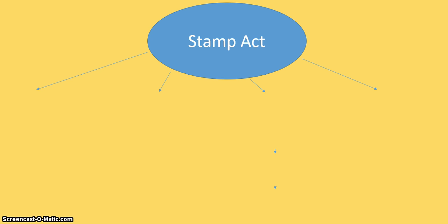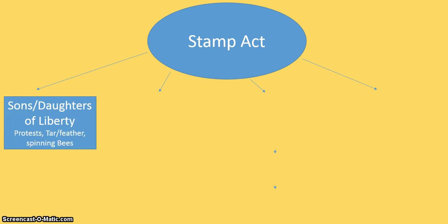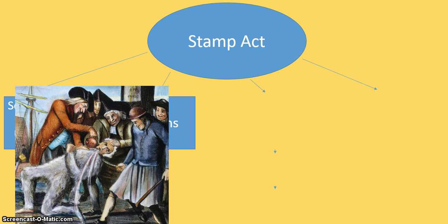The Stamp Act is going to have a lot of responses. First we get the Sons and Daughters of Liberty — these are protest groups that did anything from protesting to petitioning to tar and feathering. The Daughters of Liberty would do spinning bees where they would make their own products rather than buying them from Britain. Petitions would be a big thing — you'd petition the king. Tar and feathering was the more violent thing they would do to tax collectors. This was actually a very violent and not nice thing to do to people.